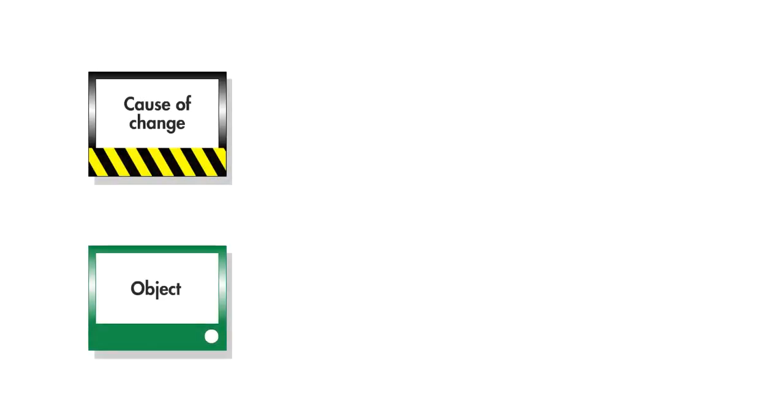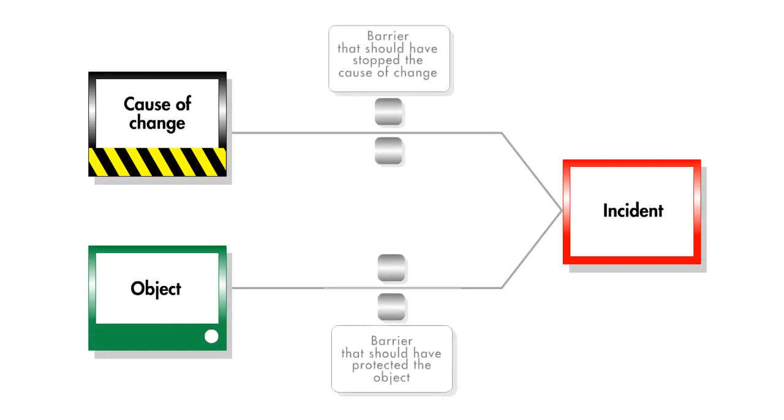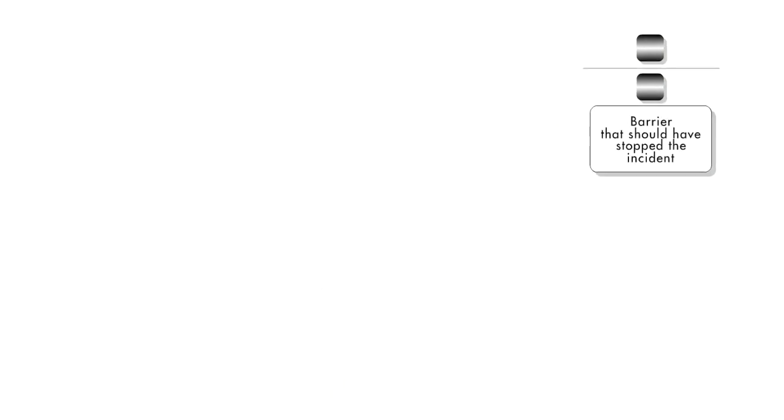The ideas in the human behavior model are not new. They are the theory that lies behind tripod incident analysis, in which we diagrammatically show the events that took place in the incident and the barriers that should have stopped it. One of the ways of using the human behavior model is to obtain a deeper understanding of why the barriers failed. In the tripod approach to analyzing incidents, when a barrier fails, it's the result of an error or an intentional act, the direct cause.